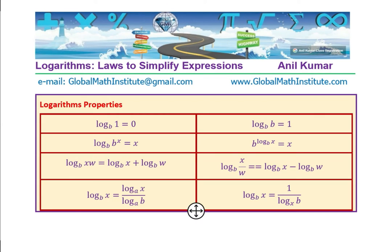Let us look into the laws. Log base b of 1 is always 0. If the base and the argument are the same, log base b of b is just 1. Log base b of b to the power x is x. B to the power of log_b(x) is x. The product form: log base b of (x times w) is the sum of logarithms, and the quotient is the difference of logarithms. You can also look into my videos for the proof of these laws.